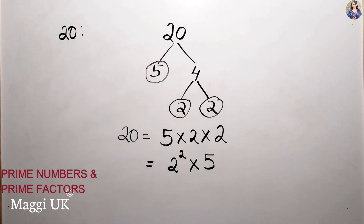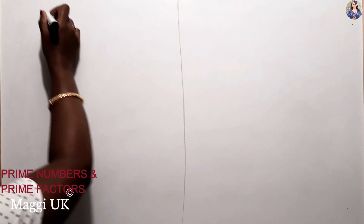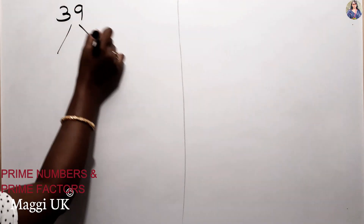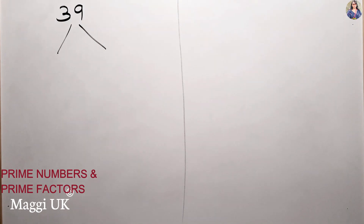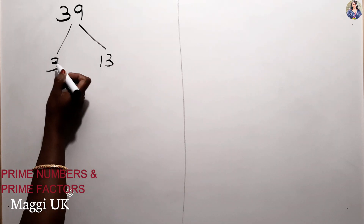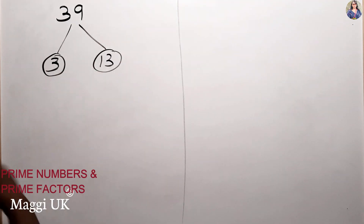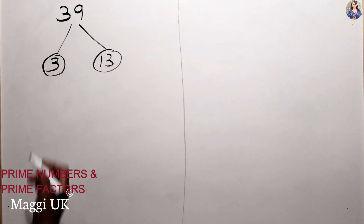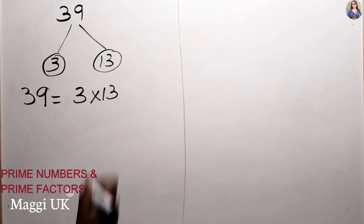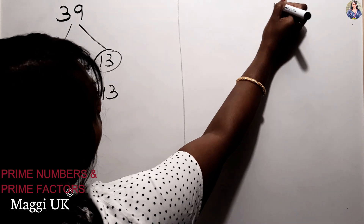The next example: find the prime factorization of 39 using a factor tree. The factors of 39 are 3 and 13. Both 3 and 13 are already prime numbers, so we can't break them down any further. Therefore, the prime factorization of 39 is simply 3 × 13.